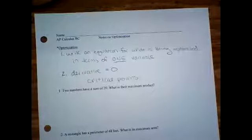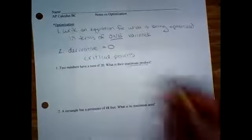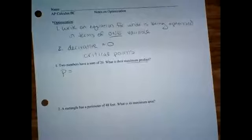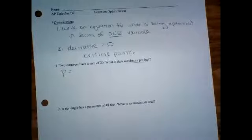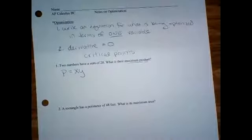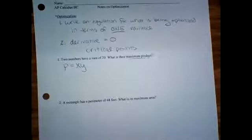So you write an equation for whatever is being optimized. If you have to do a little bit of algebra, so be it. Derivative equals zero. Okay. So number one, two numbers have a sum of 20. What is their maximum product? We want to maximize the product. So I'm going to use P for product. P equals, what does product mean you're doing with the two numbers? Multiplying them. I'm going to call them X and Y. So it would be X times Y. Some of you may already know the answer. Go with me though, because I want you to understand the process so that you can apply it to other problems.